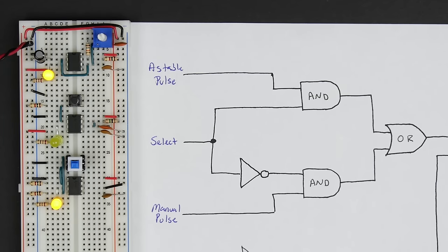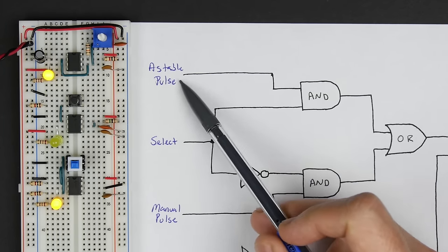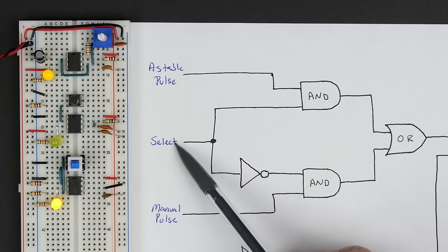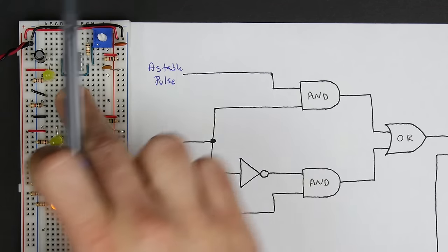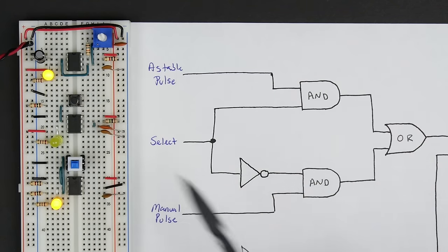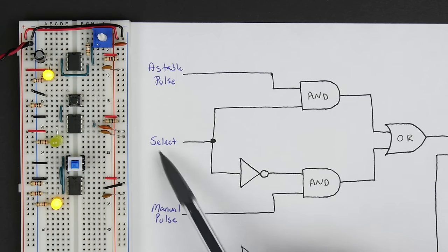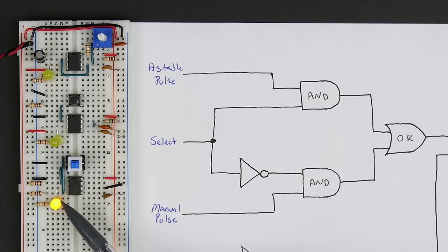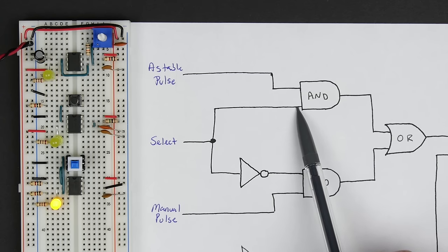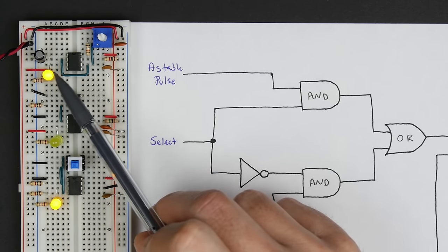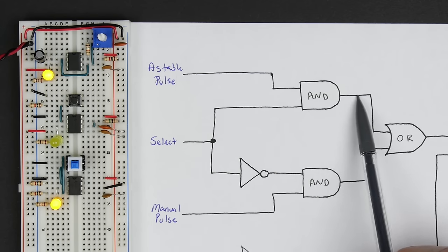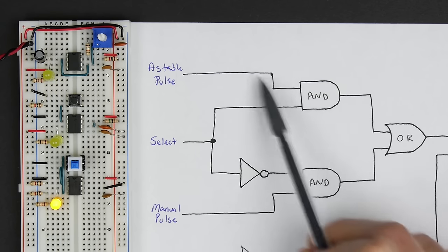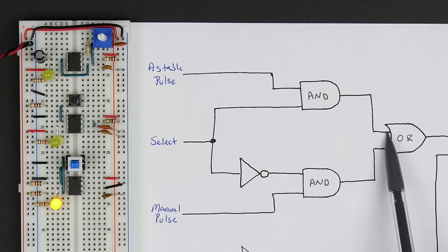I came up with a pretty simple circuit that I think will do the trick. We've got our astable pulse input, our select (the push-button select), and our manual pulse button. If our select is on, then we have a 1 coming into this AND gate. So our astable oscillator, whether it's a 1 or a 0, is just going to come out on this output — because a 1 AND a 1 is a 1, and a 0 AND a 1 is a 0. So that just passes through and comes down to the OR gate.